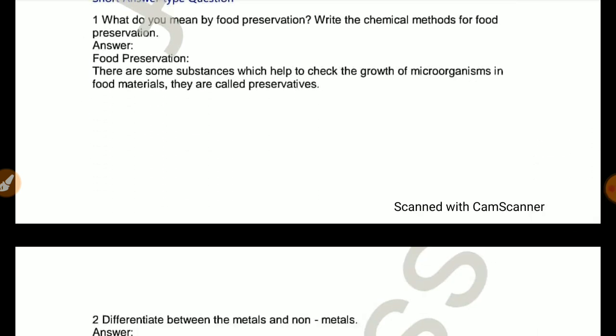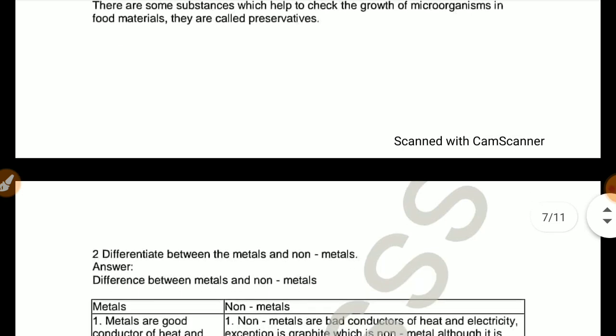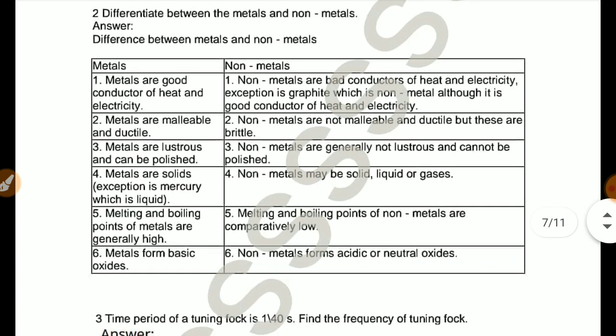What do you mean by food preservation? Write the chemical method for food preservation. There are some substances which help to check the growth of microorganisms in food materials. They are called preservatives.